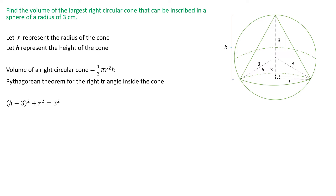Using the Pythagorean theorem for the right angle triangle inside the cone: (h − 3)² + r² = 3². Isolating for r squared gives us 9 minus (h − 3)². Expanding (h − 3)² gives h² − 6h + 9, so simplifying further we get r² = 6h − h². The 9s cancel out.